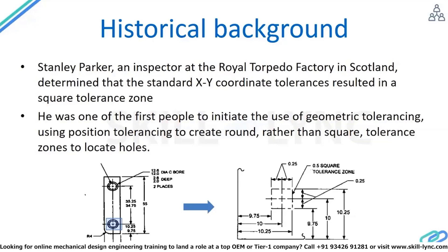Parker stated this square tolerance zone is a limitation of coordinate dimensioning, and he was one of the first people to initiate the use of geometric tolerancing. Instead of dimensioning and tolerancing the coordinates, he started dimensioning and tolerancing the geometry of the part — in our case, the cylindrical hole. Instead of dimensioning the axis of the hole, he started to dimension the whole geometry.